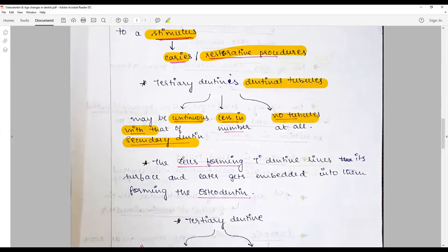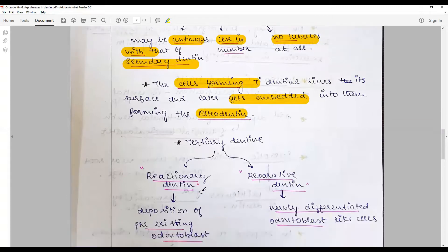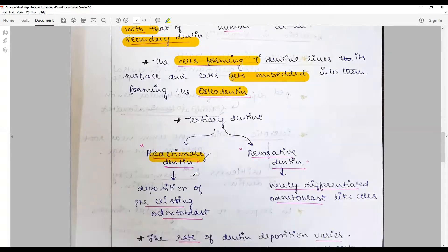What happens is the cells forming the tertiary dentine line its surface and later get embedded into them, forming the osteodentine. It could be a reactionary dentine or a reparative dentine. When the odontoblast survives the noxious stimulus and the quality of dentine produced is not of that pre-quality, that is called reactionary dentine.